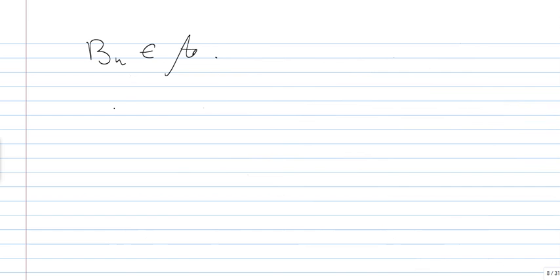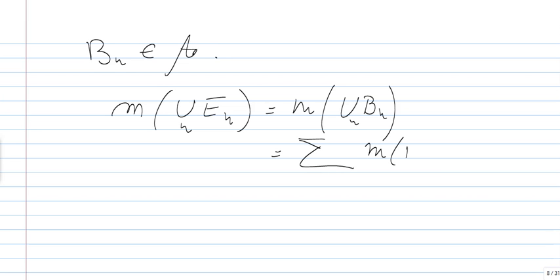Now, we know that the measure of the union of the E_n's would be equal to the measure of the union of the B_n's. Since the B_n's are disjoint to each other, this is sigma, this is our main assumption, our fundamental assumption. By monotonicity of M, we know that each M of B_n has a value M of B_n less than M of E_n, because B_n's are included in E_n, which implies the inequality that we wanted to prove.